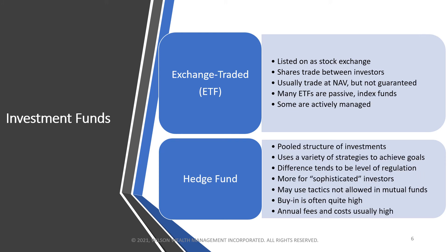Exchange-traded funds, or ETFs, are kind of like closed-end funds — they're listed on a stock exchange and shares trade between investors. They usually trade at net asset value, though supply and demand may create small premiums or discounts. It used to be that all ETFs were passive index funds that simply replicated things like the TSX 300, Dow Jones 30, S&P 500, or NASDAQ 100. But over time, you're seeing more exotic ETFs — some actively managed, some inverse which bet on bear markets, and some with multipliers that use leverage to increase returns by two or three times.